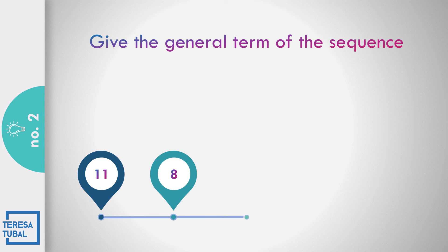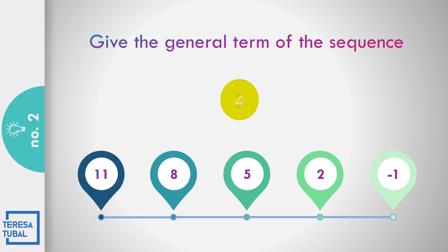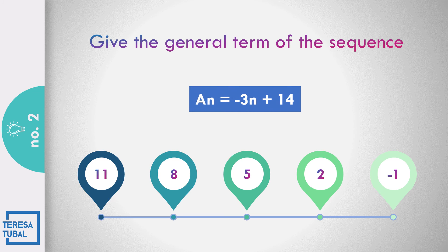How about number 2? The sequence is 11, 8, 5, 2, and negative 1. 15 seconds. The answer is a sub n is equal to negative 3n plus 14.